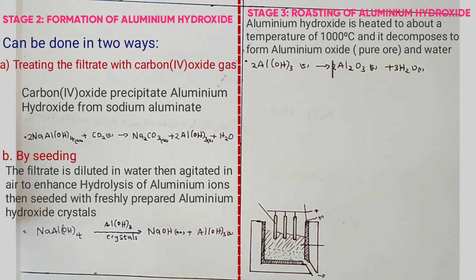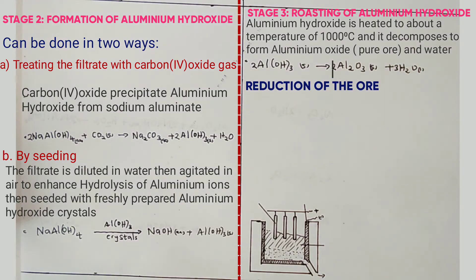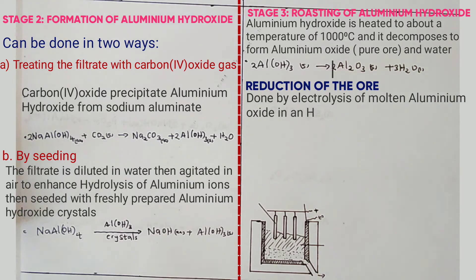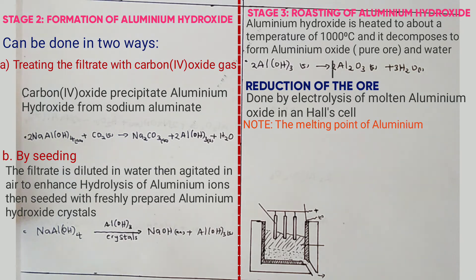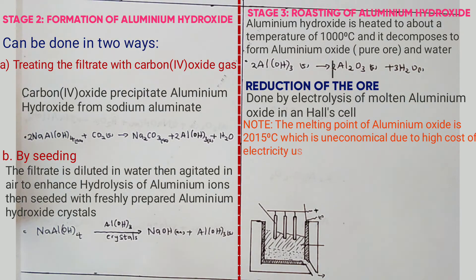After we get pure bauxite, we now come to reduction of the ore. Reduction of the ore is done by electrolysis in a Hall cell. Both the anodes and the cathode are made of carbon electrodes. The melting point of aluminium oxide is about 2015 degrees Celsius, so operating at this temperature becomes uneconomical due to high electricity costs used for heating.